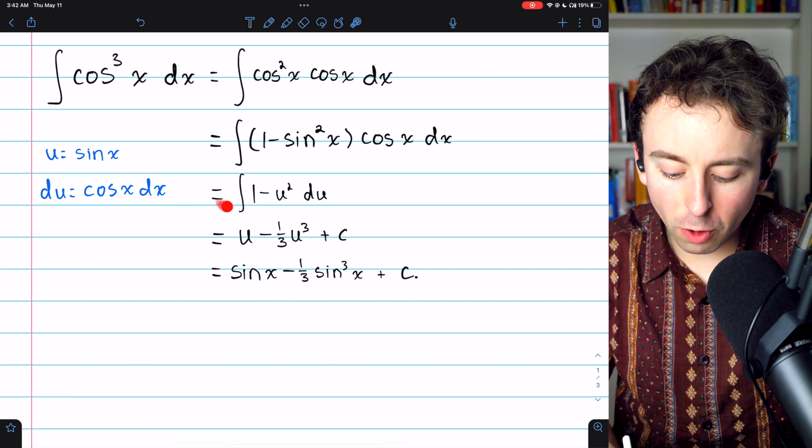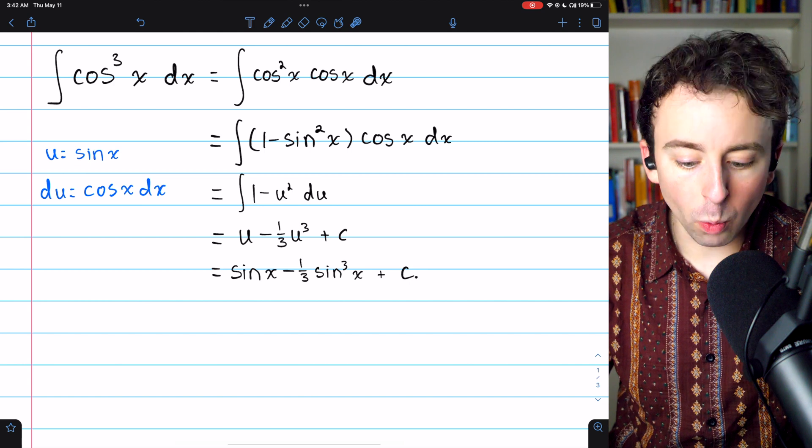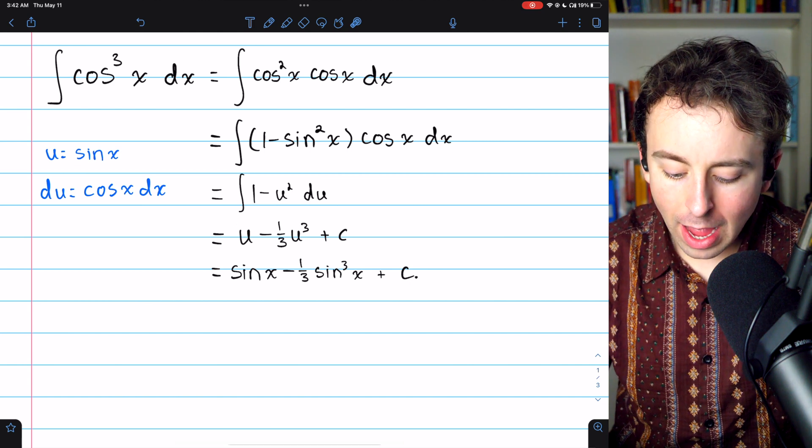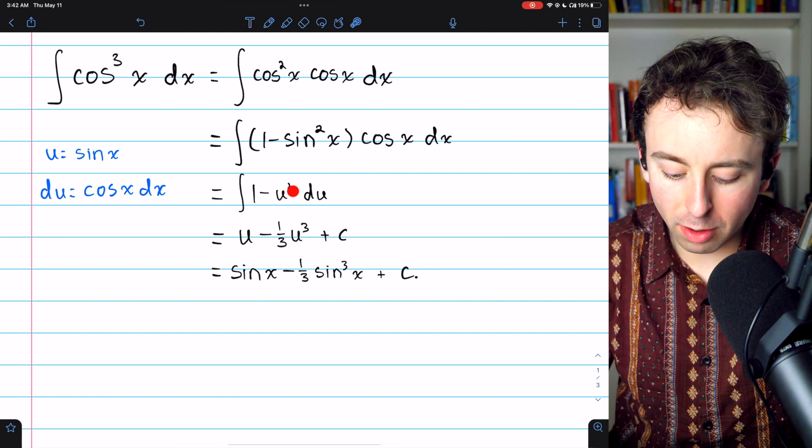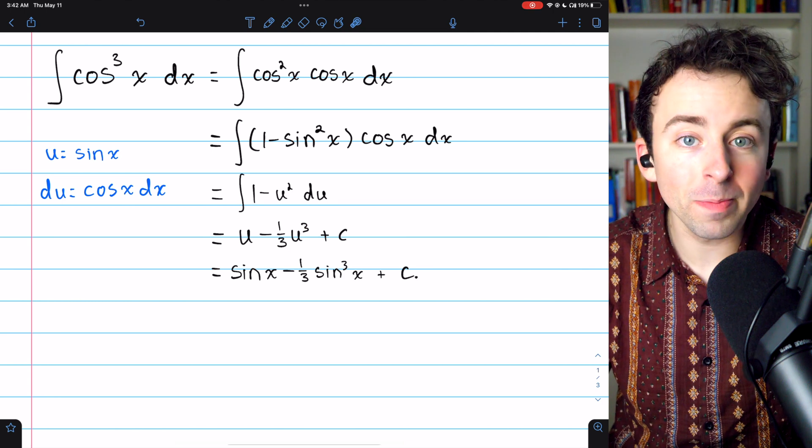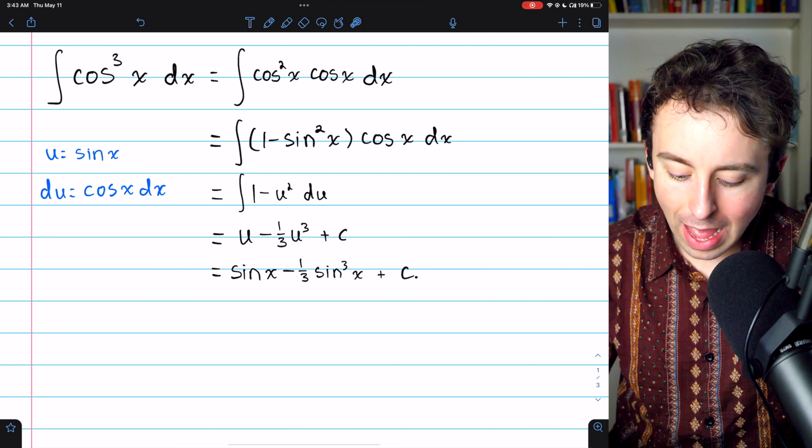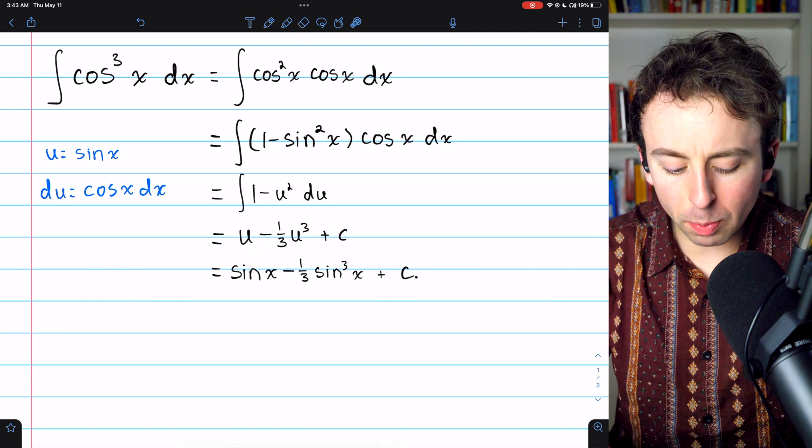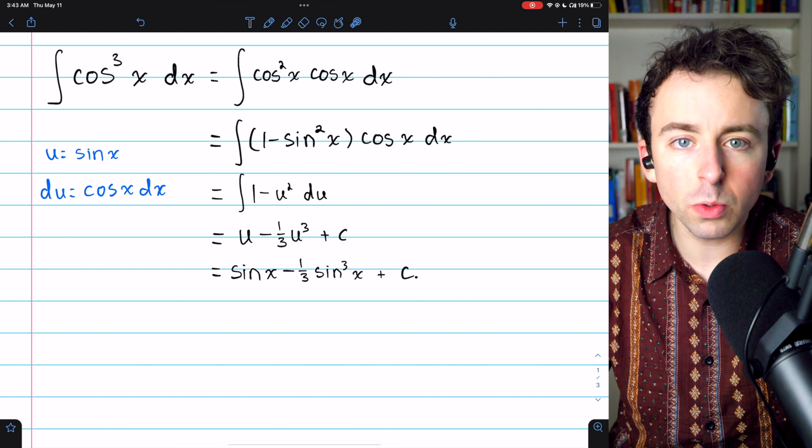Then we just integrate 1 minus u squared using the power rule. 1 integrates to u, and minus u squared, increase the power by 1, divide by the new power, that's negative 1 third u cubed. Add on the arbitrary constant, and then replace u with what we set it equal to, which was sine x.